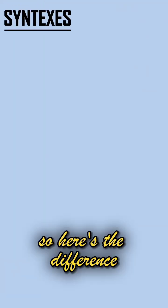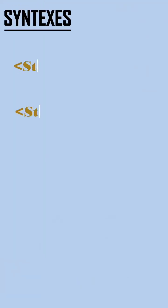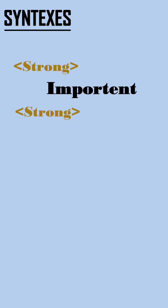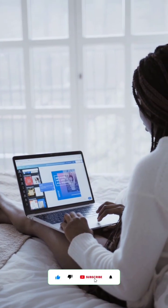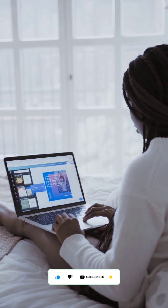So here's the difference: use strong when something is important, and use em when you want to add emotional stress or tone. They're not just for style — they help with accessibility and SEO too. Try them out and see the difference.